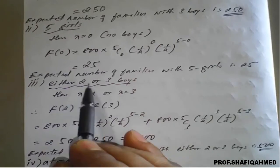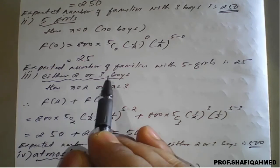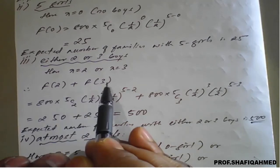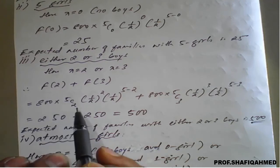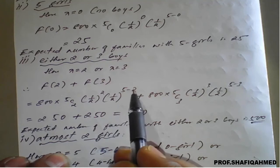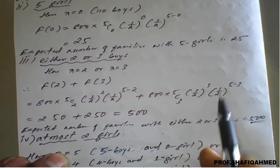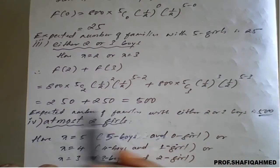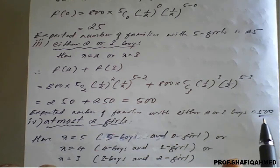Third part: either 2 or 3 boys out of 5. At that time x may be 2 or x may be 3. Because of 'or', it becomes F(2) + F(3). Applying x = 2: 800 × 5C2 × (1/2)^2 × (1/2)^3, and for F(3): 800 × 5C3 × (1/2)^3 × (1/2)^2. On simplification, the first result is 250 and the second is 250, giving 250 + 250 = 500. Therefore, expected number of families with either 2 or 3 boys is 500.